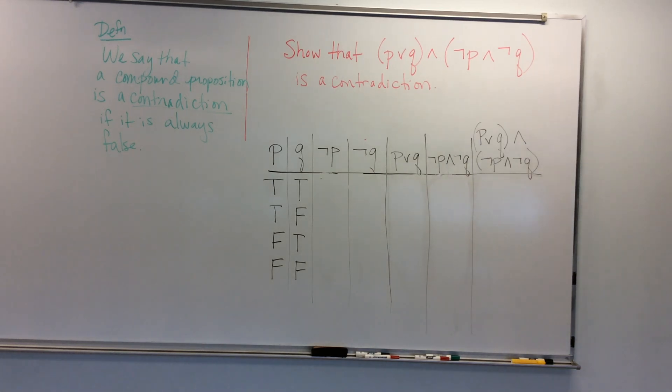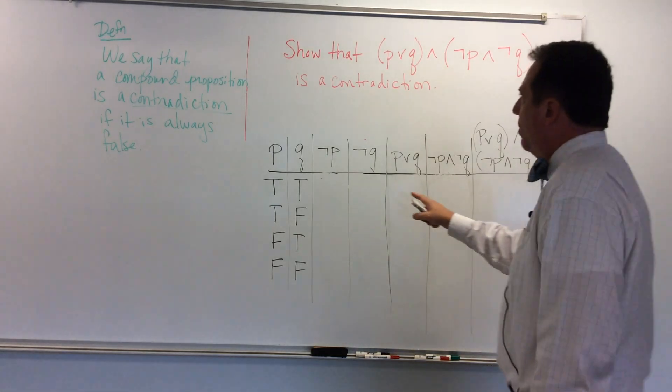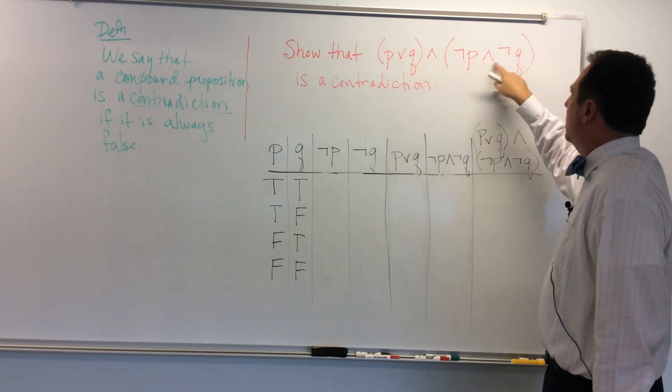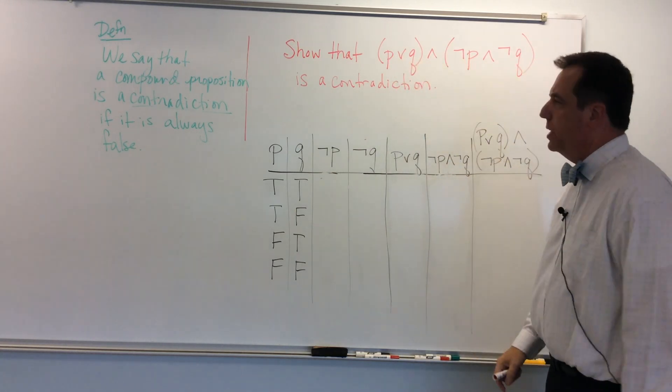Now we're going to show that two compound propositions are a contradiction using a truth table. So we're going to show that P or Q and not P and not Q gives us a contradiction.